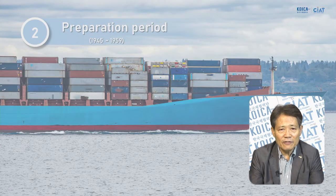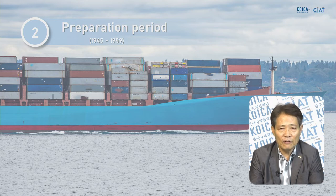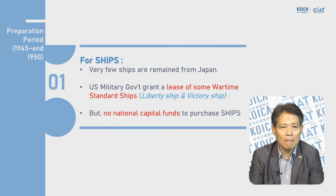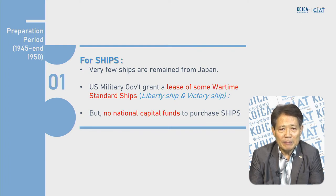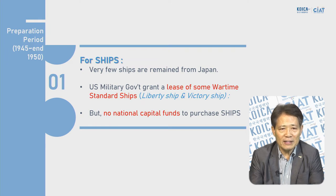Let's start with the first step: the preparation period during 1945 to 1959 — about 15 years. A few ships remained from Japan when Korea became independent, and the US government granted the lease of some wartime standard ships — called Liberty Ships and Victory Ships. However, there was no national capital fund to purchase ships, no shipbuilding materials, no skilled and trained personnel to design and construct a ship, and no technology or skills at all. It was very difficult to build ships in Korean shipyards.